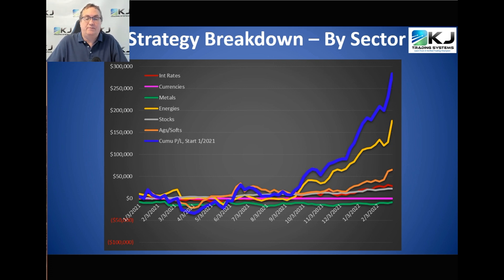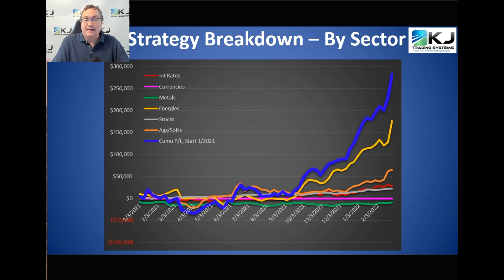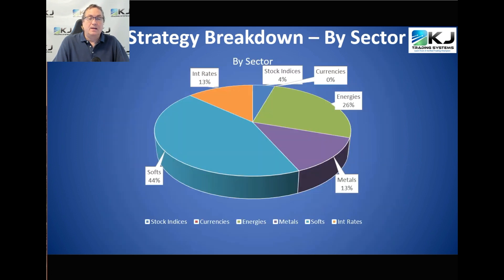Breaking it down by sector: energies, eggs, softs, and stocks are the ones that have been doing really well lately. You can see in the chart that energies have really taken off, and a lot of that is the uncertainty with Russia and Ukraine. Even before that, back to about October, energies have been in a nice bull trend. Eggs and softs are the second best — some of that is related to current conflicts, but they've also been trending up over time.